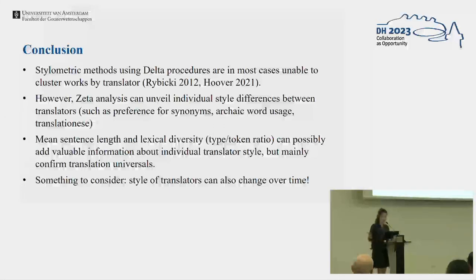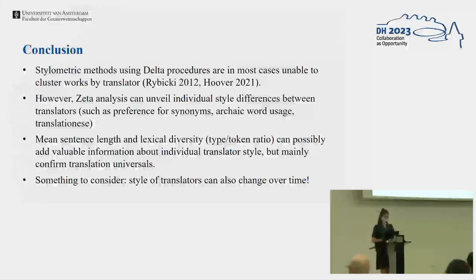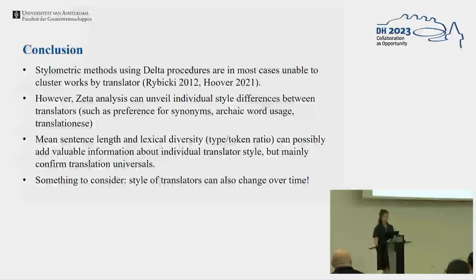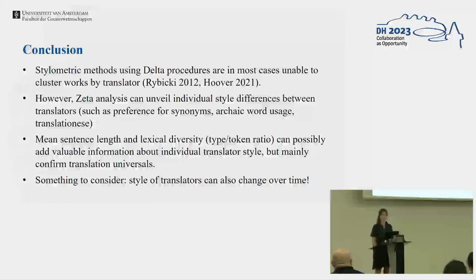Some concluding remarks: stylometric methods using delta procedures are, in most cases, unable to cluster works by translator. However, Zeta analysis can unveil individual style differences between translators, such as a preference for synonyms, archaic word use, or translationese. In this project I'm also looking at mean sentence length and lexical diversity measured by type-token ratio, because I think it can add valuable information about individual translator style. Finally, I want to mention that we have to keep in mind that the style of translators can also change over time, just like the style of authors — and I don't think we think about that very often.